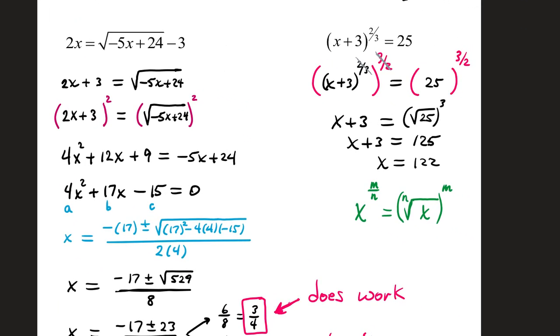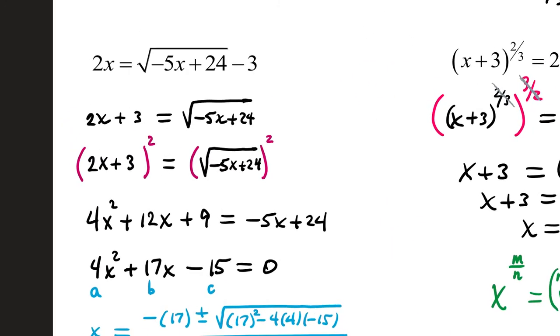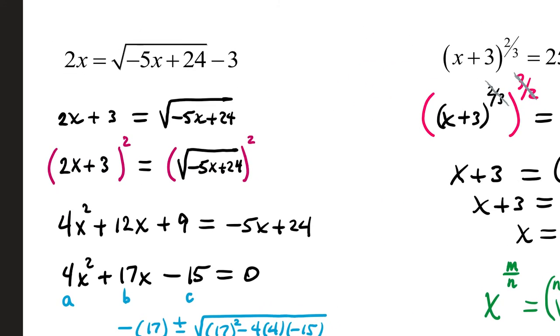Sorry, it's taking me a little bit to zoom out. Our next equation, we have 2x equals square root of negative 5x plus 24, minus 3. To get this square root radical by itself, I'm going to add 3 over 2x plus 3 equals square root of negative 5x plus 24.